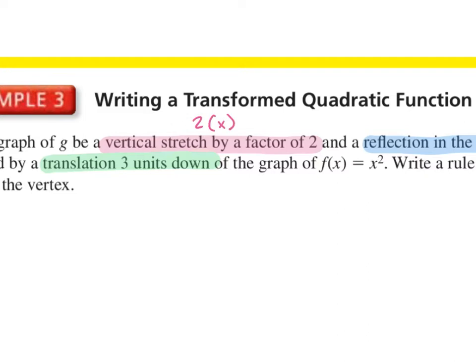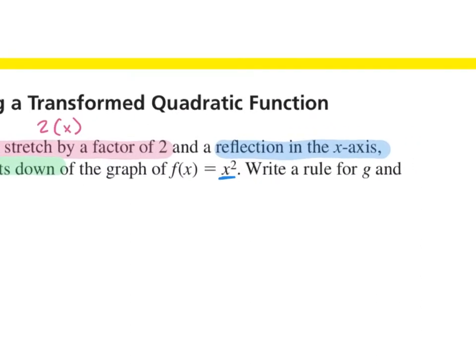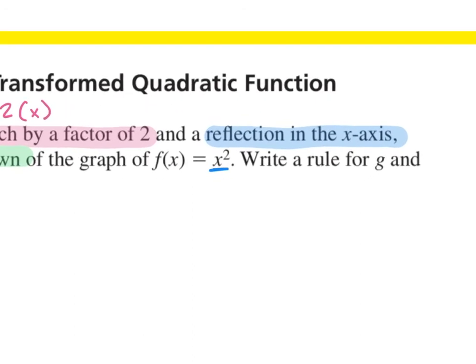Before when we were doing these, sometimes it didn't matter whether it was inside or outside, but here we have an x squared, so it definitely matters whether we're applying the transformation inside or outside the parentheses. For a reflection in the x-axis, we put a negative on the outside. You want to keep your negative x's outside.